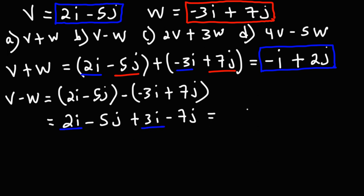2i plus 3i is 5i, and negative 5j plus negative 7j is negative 12j. So v minus w is 5i minus 12j.